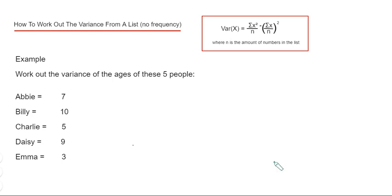And to do it, you're going to use the formula in the red box. So the formula is Σx² divided by n minus, in a bracket, Σx divided by n, close your bracket, squared, where n is the amount of numbers in the list. And this symbol here is sigma, which means sum of, and x are the values that you have.